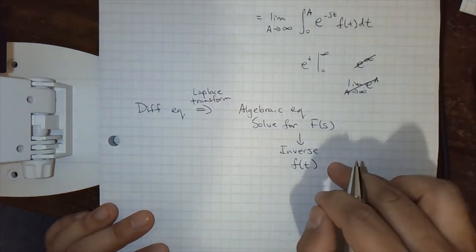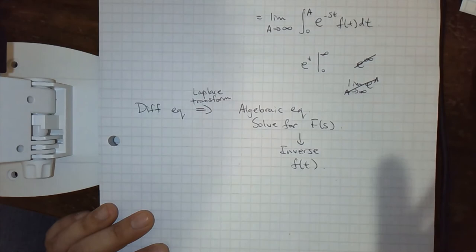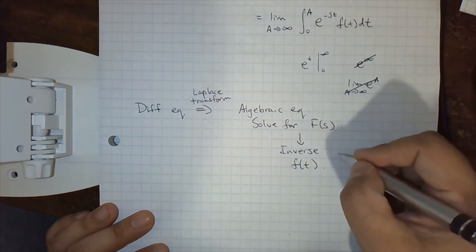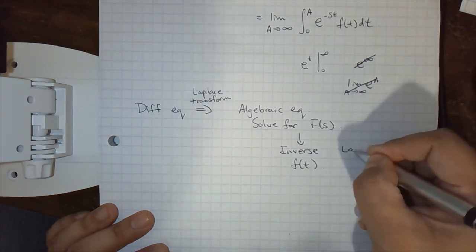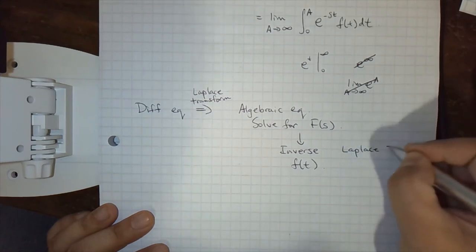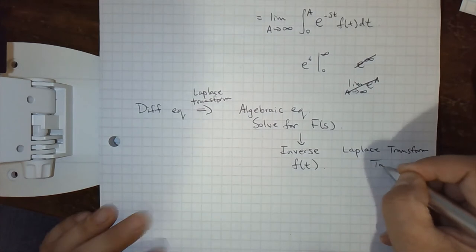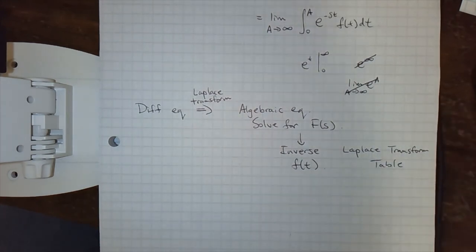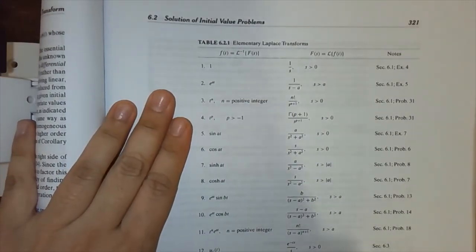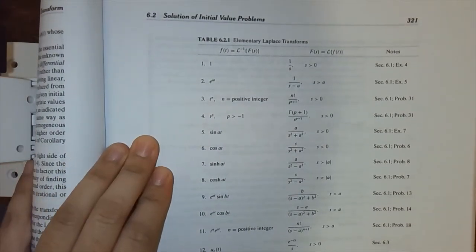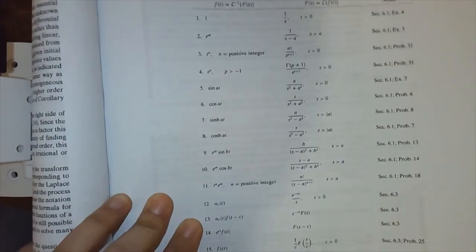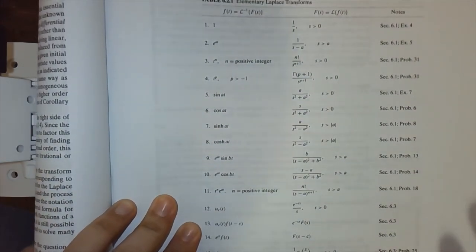There are fancy methods for taking the inverse, which are beyond the scope of the course. So we're just going to be using a Laplace transform table. That's how we're going to take the inverse. So I'll show you what the table looks like. This is from the textbook. So here's my copy of the textbook. The link to Heather Lee's lectures also has PDFs. So if you don't have the textbook, you'll be able to get these or just find one online.